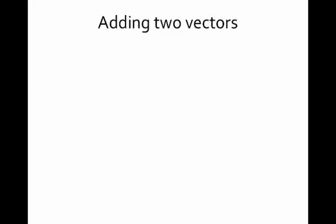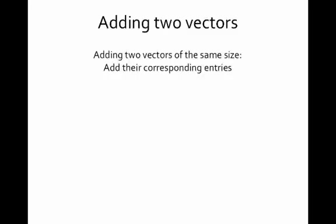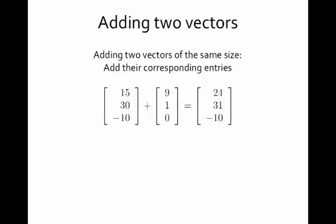We can also perform arithmetic on vectors by adding two vectors. If I have two vectors of the same size — the same number of entries — then I add their corresponding entries. That's what it means to add two vectors. For example, here I've got two 3 by 1 vectors, and to add them I'm simply adding the corresponding entries: 15 plus 9, 30 plus 1, and negative 10 plus 0.